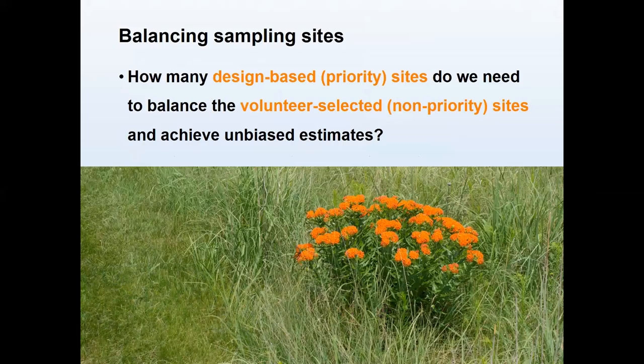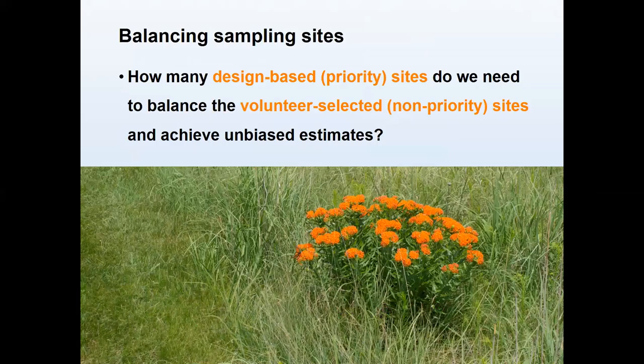We need about 400 to 800 sites per unit of interest to detect this trend of 4% decline per year. Ideally we would take all of those from design-based samples — we almost certainly cannot do that. So what combination of design-based sites versus volunteer-selected sites do we need? Is there a point where you get too many volunteer-selected sites and that biases your estimates? What can you do about it?